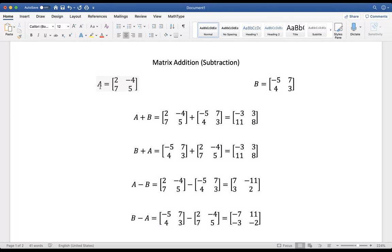Let's first say we have two matrices. Matrix A, and we always usually designate matrices with capital letters. So this is matrix A, it's a two by two with four elements: two, negative four, seven, and five. Matrix B is another two by two matrix: negative five, seven, four, and three, also having four elements.